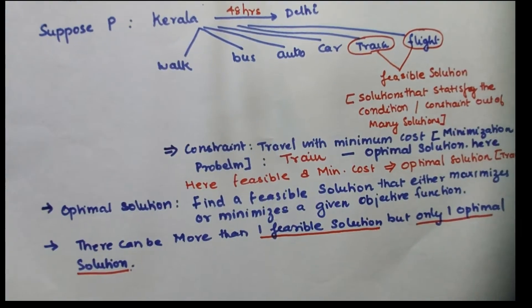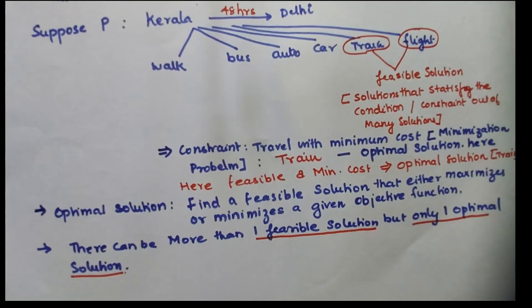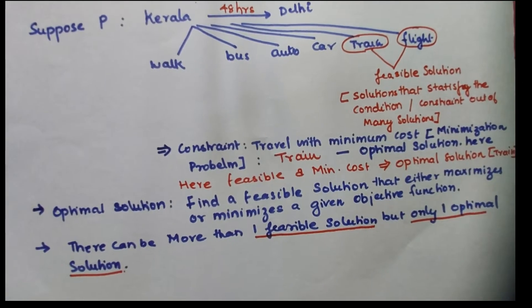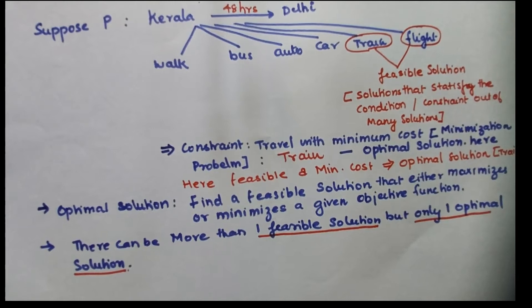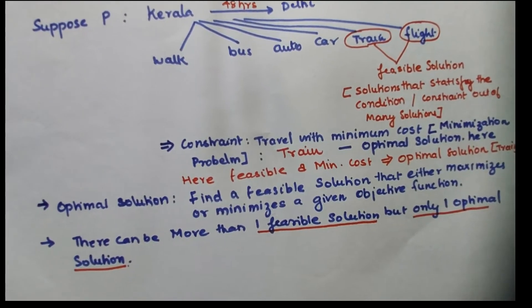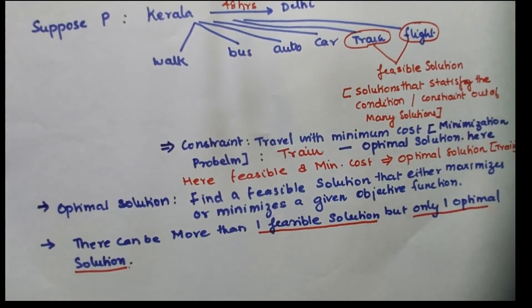It can be a minimization problem or maximization problem according to the constraint given to you. From that, you will find an optimal solution. There will be more than one feasible solution. You had two feasible solutions in the example I gave you.